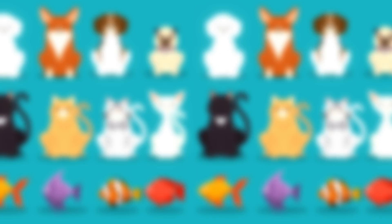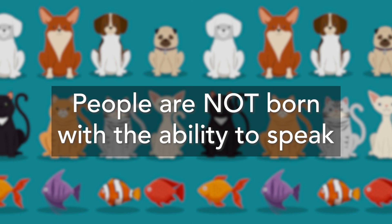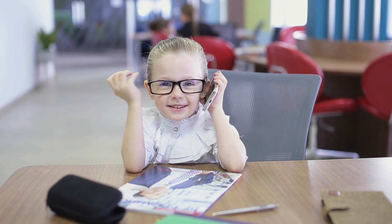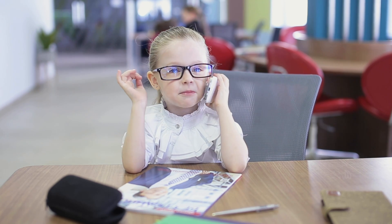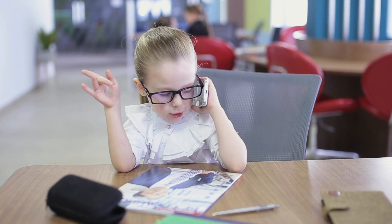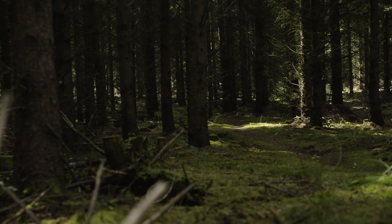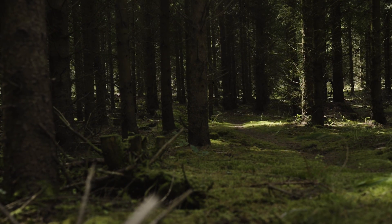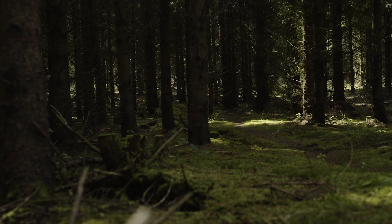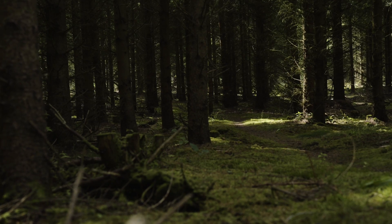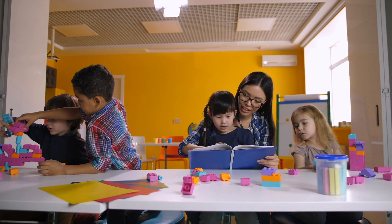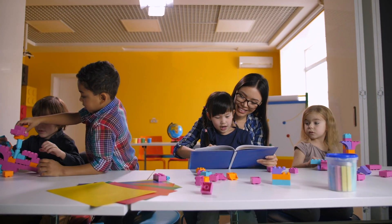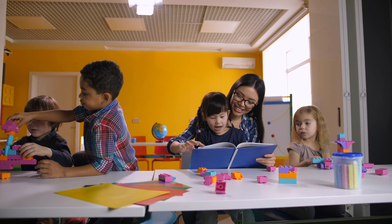Sometimes we might confuse innate behaviors with behaviors that are learned. For example, people are not born with the ability to speak, but it might seem like they are because once a child begins speaking it seems to come easily. However, if a child was born in the wilderness without other people around, that baby would only grunt and make sounds it hears there.